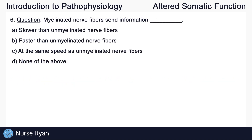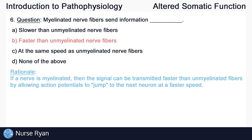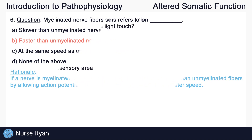Question number six: myelinated nerve fibers send information how? The answer here is B, faster than unmyelinated nerve fibers. If a nerve is myelinated, then the signal can be transmitted faster than unmyelinated fibers, by allowing action potentials to jump to the next neuron at a faster speed.